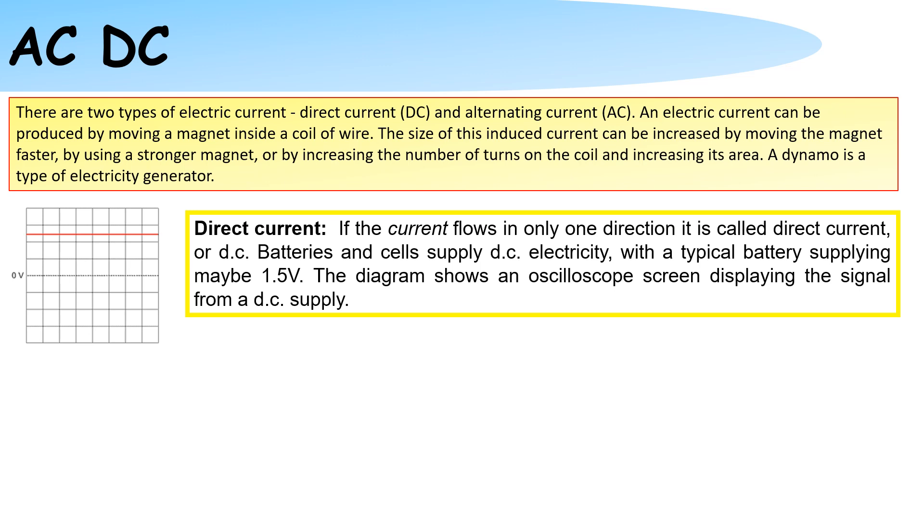If we increase the current or increase the voltage, then the level of the line would also increase.